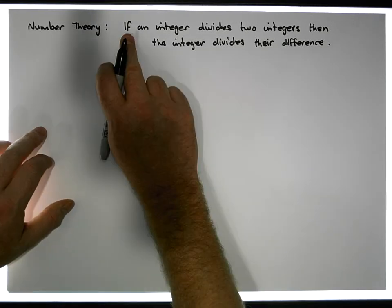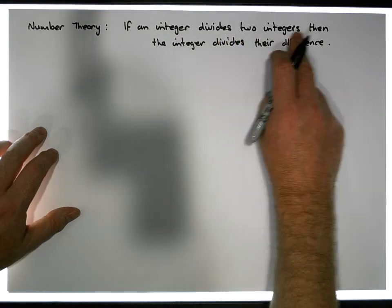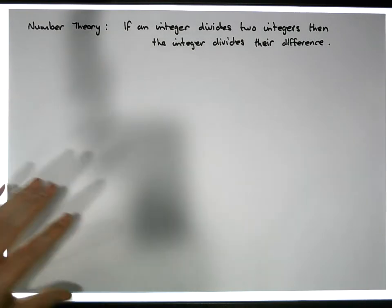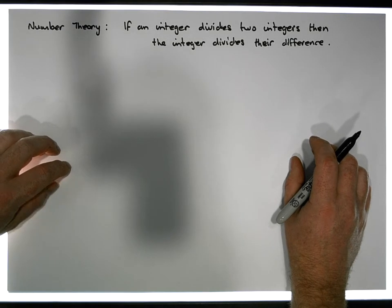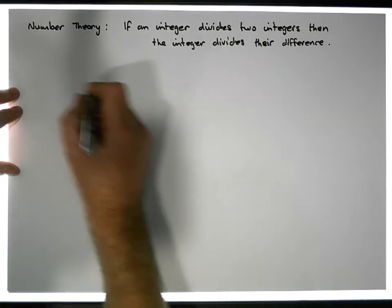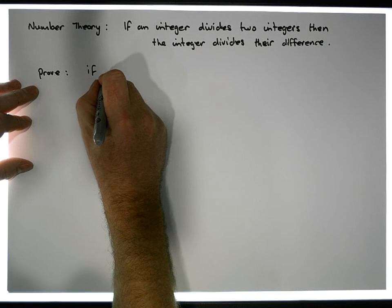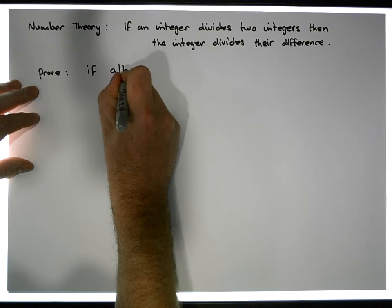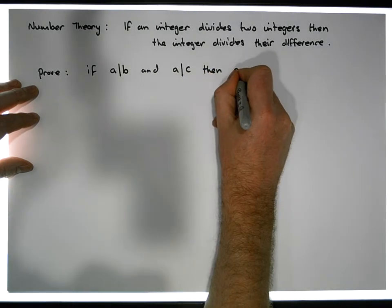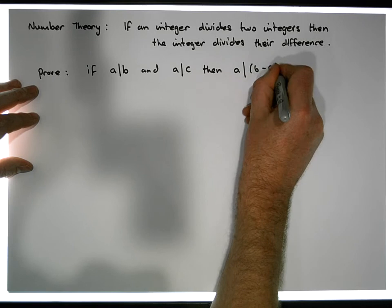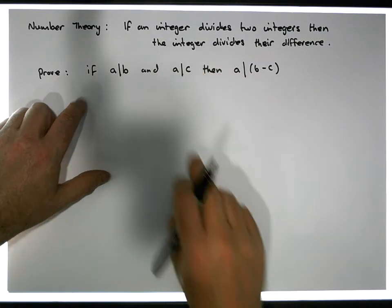What we'd like to show is this: if we have an integer, and more importantly, if a particular integer divides two integers, well then that integer divides their difference. So what we'd like to prove is this: if we have an A that divides a B, and we have an A that divides a C, well then A divides the difference between B and C. We'd like to prove this particular fact, where A, B and C are integer values.